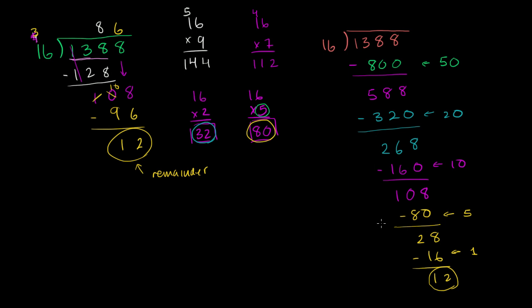But you might say, well how do we know how many times does 16 go into 1,388? Well it goes 50 times, plus 20 times, plus 10 times, plus 5 times, plus 1 time. So we can just add up all of these things on the right hand side. It's going to be 50 plus 20 is 70, plus 10 is 80, plus 5 is 85, plus 1 is 86. So there we have it. It went into it 86 times with the remainder of 12.